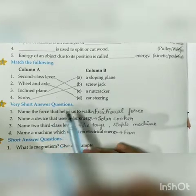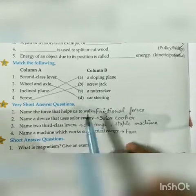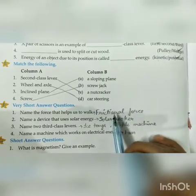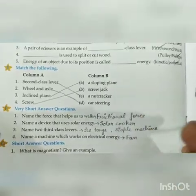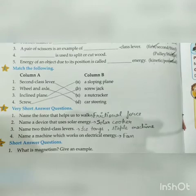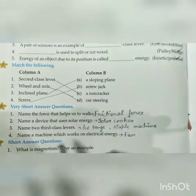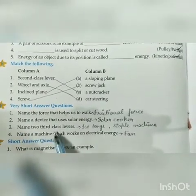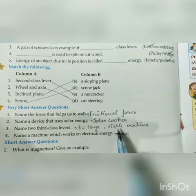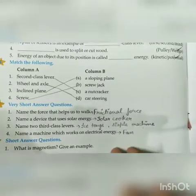Next, very short question answers — question number F. First: name the force that helps us to walk. The answer is frictional force, because without frictional force we would slip and fall. Second: name a device that uses solar energy. The answer is solar cooker; you can write any other answer also. Third: name two third class levers. The answer is ice tongs and staple machine; you can also opt for any other answer.